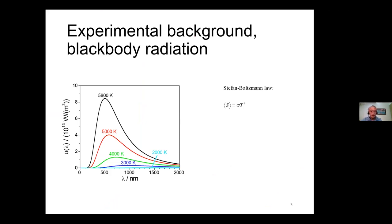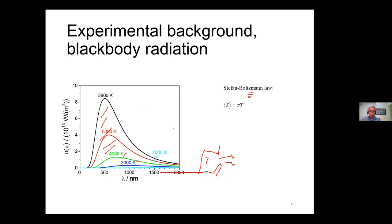Everybody knows black body radiation. If you have some object and consider it as a black body, the energy output from a cavity — heated to a certain temperature — is perfectly described by Planck's law. For example, here is typically the temperature of the sun, and you can fit it quite nicely with this form. If you integrate all these areas, the total area gives you the total heat transfer, which is given by the Poynting vector average.